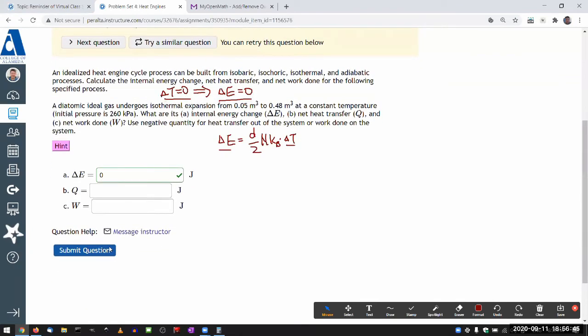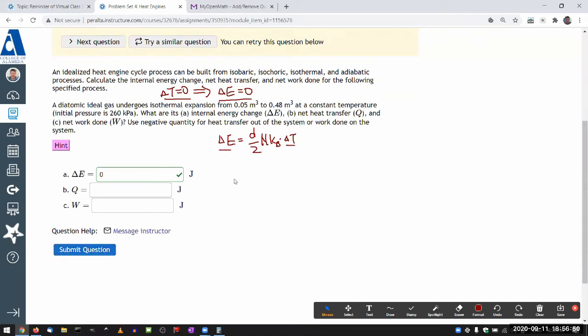Then that also gives you an immediate relationship between the heat transfer and the work done. You use the first law of thermodynamics that says change in internal energy is equal to net heat transfer minus work done by the system. So if the change in internal energy is zero, you can see that the amount of heat transfer is equal to work done by the system.